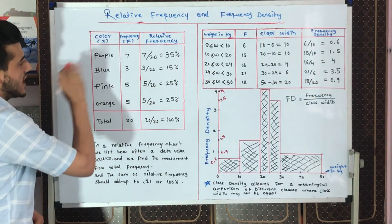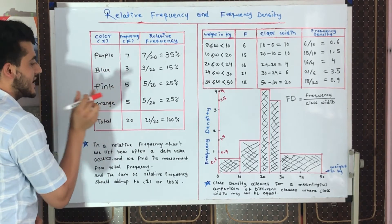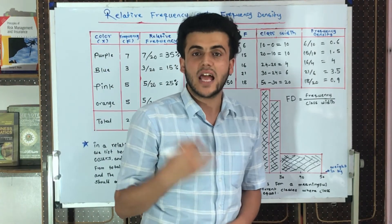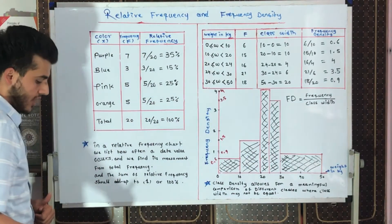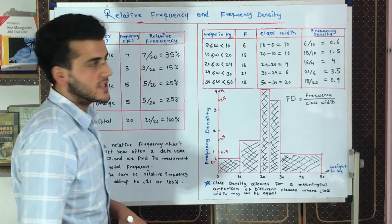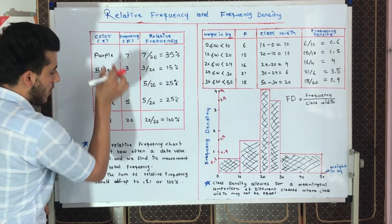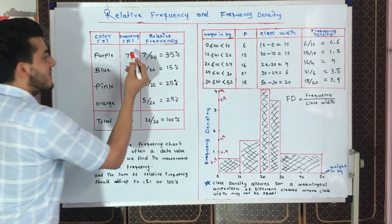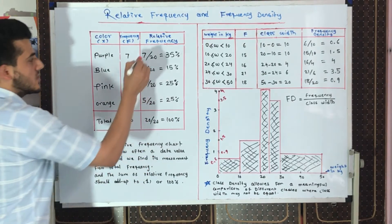Here we have a list of colors — purple, blue, pink, and orange — and their frequencies. However, we do not know the exact contribution of each color. To find this, we study relative frequency: we sum up all the frequencies, and the sum is 20.